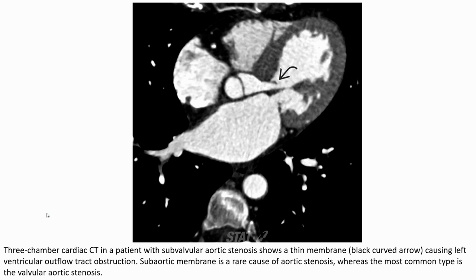Three-chamber cardiac CT shows sub-valvular aortic stenosis with a thin membrane causing left ventricular outflow tract obstruction. Subaortic membrane is a rare cause of aortic stenosis, whereas the most common type is valvular aortic stenosis.